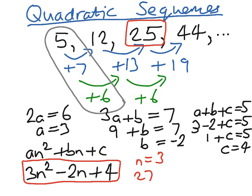minus 2 lots of 3, which is 6, and adding 4. So 27 minus 6 is 21, plus 4 is 25, and that is indeed the third term of the quadratic sequence.